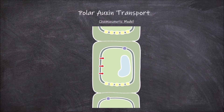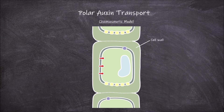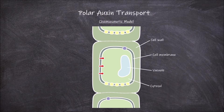First we'll briefly go over a few key features of plant cells. The first feature is the outermost structure of a plant cell — the cell wall, which is represented by the outer green area here. Then there is the cell membrane inside from this. Inside the cell membrane we have the cytosol and the large vacuole.